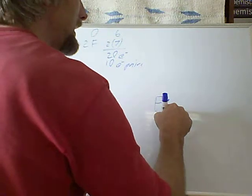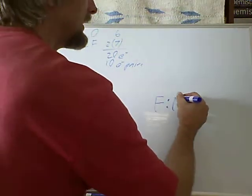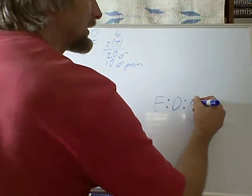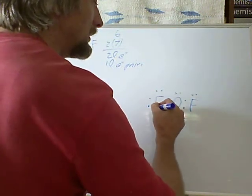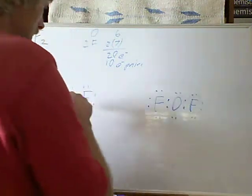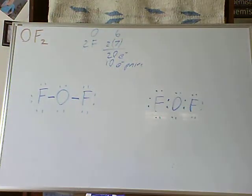We could have drawn it with pairs instead of lines for the bonding electrons, this is totally acceptable, but this is a cleaner structure, easier on the eyes.